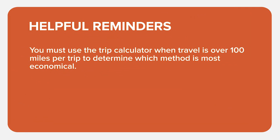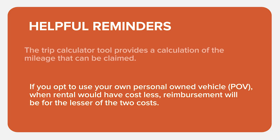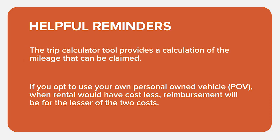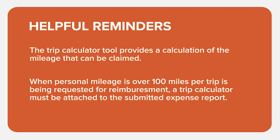Here are some helpful reminders for your travel. You must use the Trip Calculator when travel is over 100 miles per trip to determine which method is the most economical. If you opt to use your personal owned vehicle or POV when a rental would have cost less, reimbursement will be for the lesser of the costs. The Trip Calculator tool provides a calculation of the mileage that can be claimed. When personal mileage over 100 miles per trip is being requested for reimbursement, a Trip Calculator must be attached to the submitted expense report.